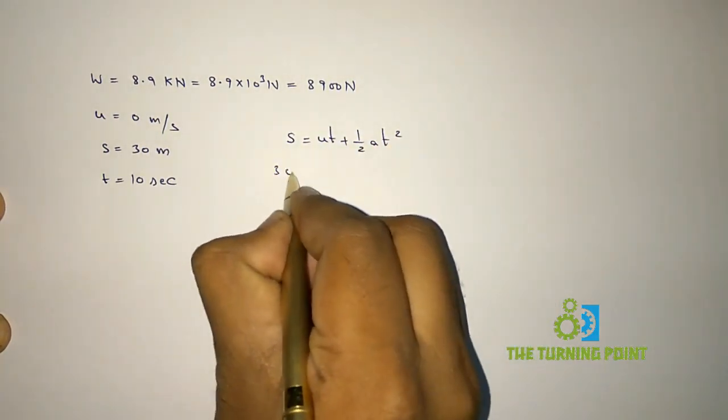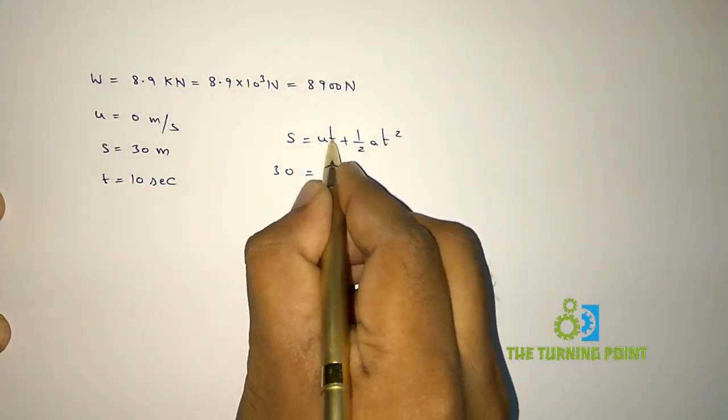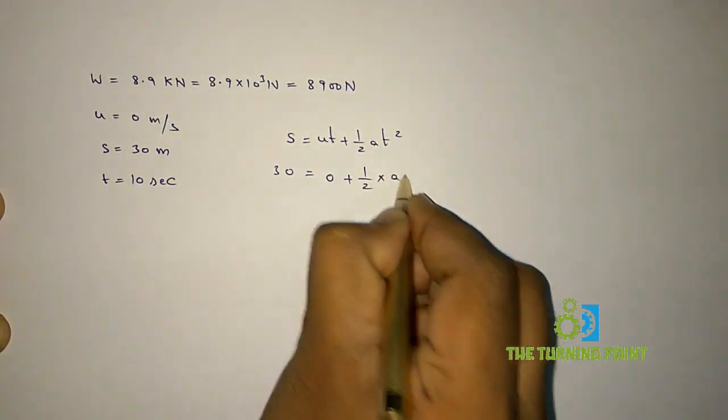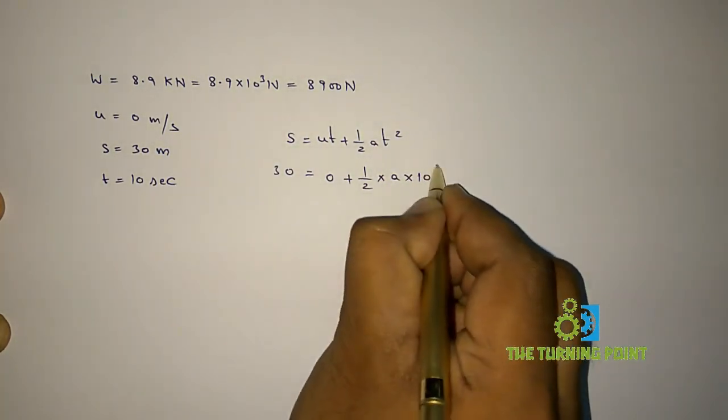S is 30 meters. Initial velocity is 0, so when you multiply with time you will get 0, plus half into acceleration a, and time is given as 10 seconds.